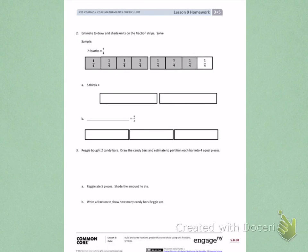This is Module 5, Lesson 9, Homework, Side 2. Number 2. Estimate to draw and shade the units on the fraction strip. Solve. Sample.